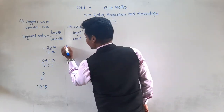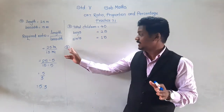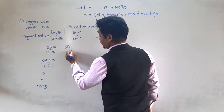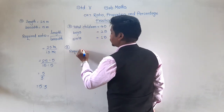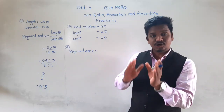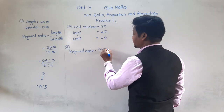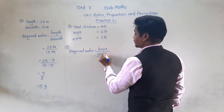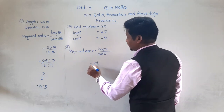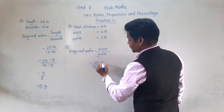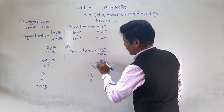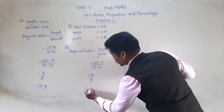Sub-question A: find the ratio of boys to girls. Boys come in the numerator and girls in the denominator. Boys are 25 and girls are 15. Both 25 and 15 are divisible by 5: 25 ÷ 5 = 5 and 15 ÷ 5 = 3. So the ratio of boys to girls is 5 is to 3.